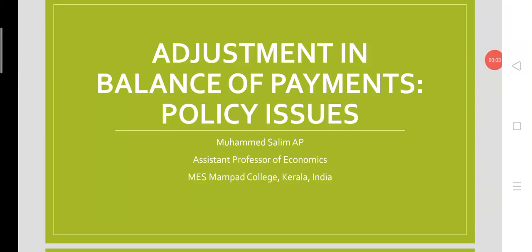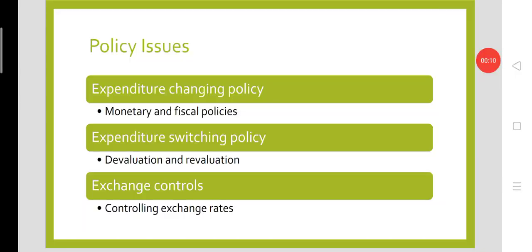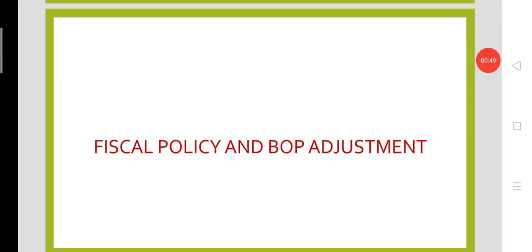Welcome to the first part of the policy issues or deliberate measures of BOP's adjustment. Policy issues or deliberate measures of BOP's adjustment takes the form of three policies: expenditure changing policy, expenditure switching policy, and exchange control measures. Here we are going to look at one part of expenditure changing policy — fiscal policy. It also includes monetary policy, but we will go into monetary policy next day. Today's topic is fiscal policy and BOP's adjustment.